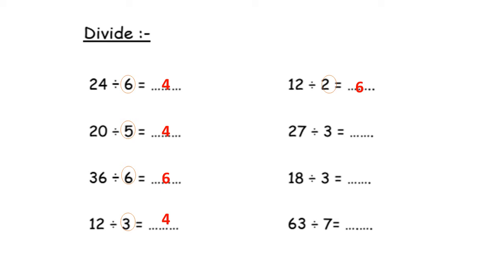27 divided by 3. Circle the number after the sign — circle 3. This is table 3. Close your hand and sing the song of table 3 until I get 27. 3, 6, 9, 12, 15, 18, 21, 24, 27. How many fingers? They are 9. So the answer will be 9.